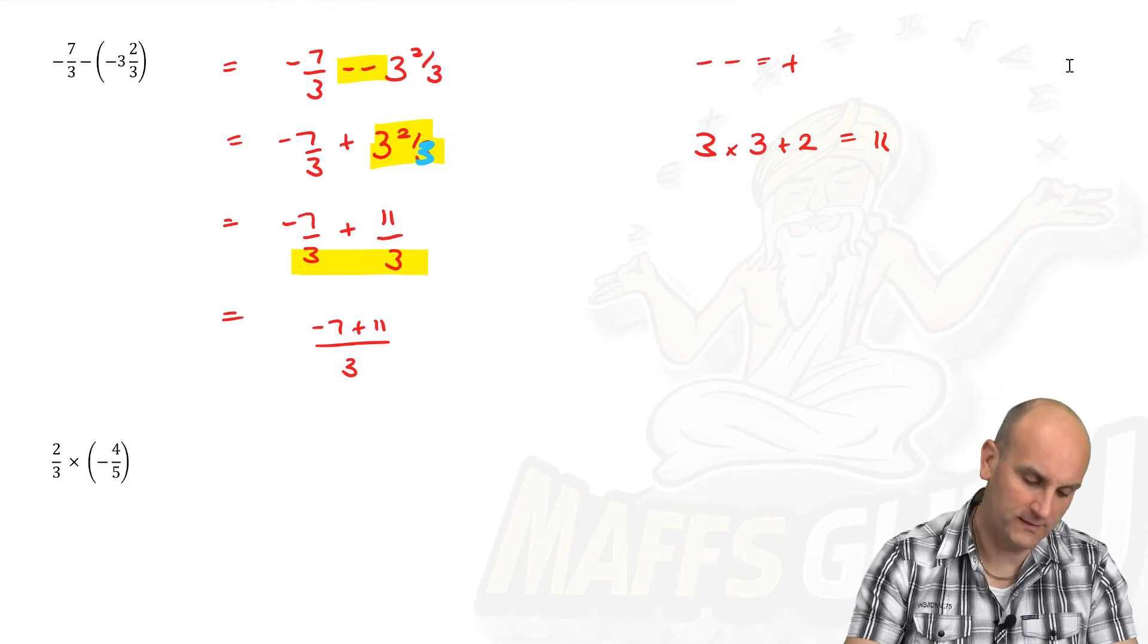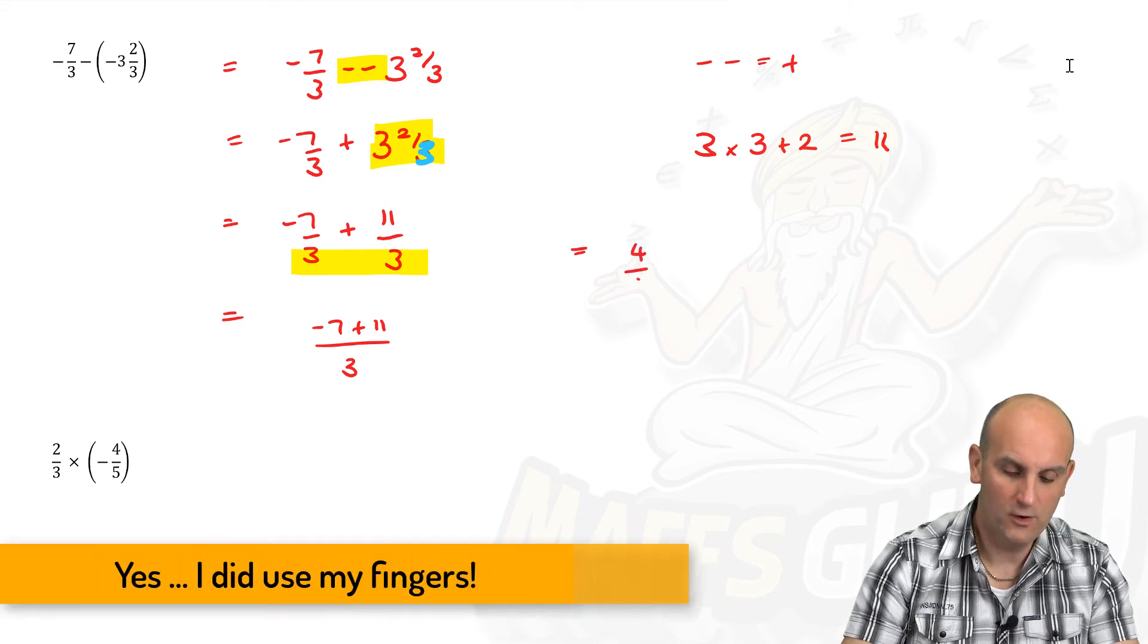Minus seven plus eleven. Eleven, seven, eight, nine, ten, eleven. Four.